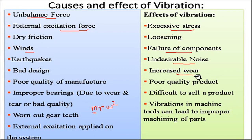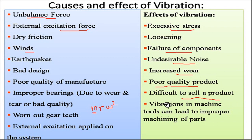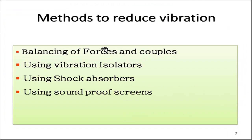Continuous motion with contact between components causes friction, resulting in increased wear. Products manufactured on a machine with high vibration will be of poor quality — which is difficult to sell in the market, since people prefer more comfortable, low-vibration systems. Vibrations in machine tools can also lead to improperly machined parts, so we must try to reduce or eliminate vibrations.